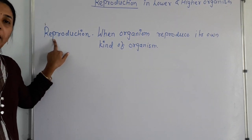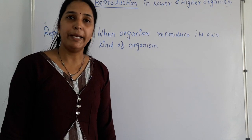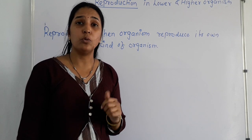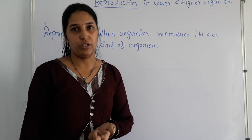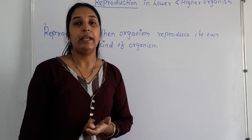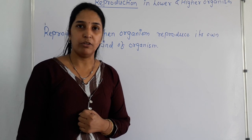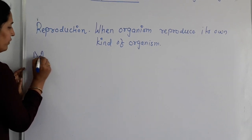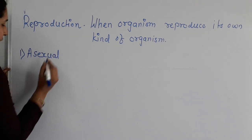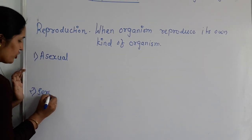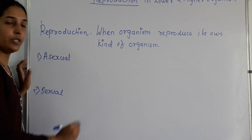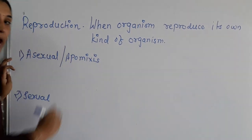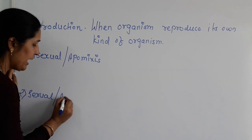Reproduction is very necessary to maintain the number of indigenous species. Each organism has its own particular method of reproduction, and it is also one of the characteristic features of living organisms. All methods of reproduction are categorized into two: one is asexual reproduction and the second is sexual reproduction. Asexual reproduction is also called apomixis, and sexual reproduction is also called amphimixis.